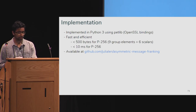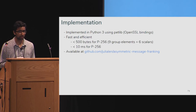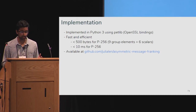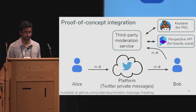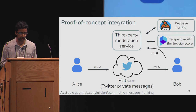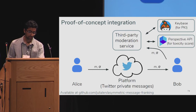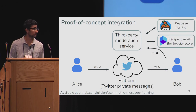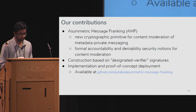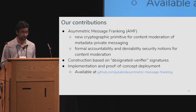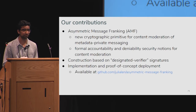We also wanted to see how this would work on existing platforms. Since asymmetric message franking doesn't require metadata, we can add it as a third-party service on top of legacy systems. We provide a proof-of-concept integration with Twitter private messages, using Keybase to manage the public key identity bindings for Twitter identities. Our integration also uses a machine learning system called Perspective to automatically score message toxicity levels. In conclusion, we introduced asymmetric message franking — a new primitive for cryptographic content moderation in the metadata-private setting. We introduced definitions and strategies to formally reason about the trade-offs between deniability and accountability, and gave a construction conceptually based on designated verifier signatures.